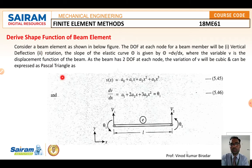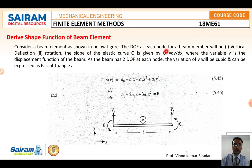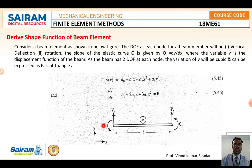Consider a beam element as shown in the figure. Each node of the beam member has two degrees of freedom: vertical deflection and rotational displacement. The slope of the elastic curve is denoted as theta, given by theta = dv/dx, where v is the displacement function in the vertical direction. Since the beam has two degrees of freedom per node, the variation of v will be cubic.